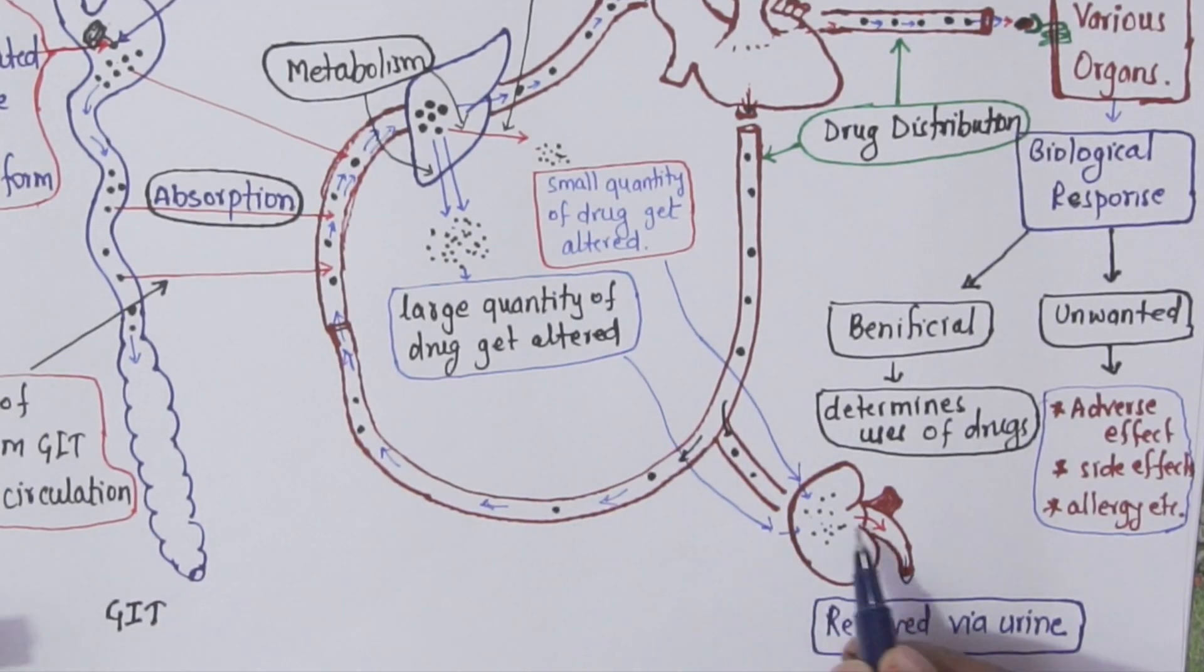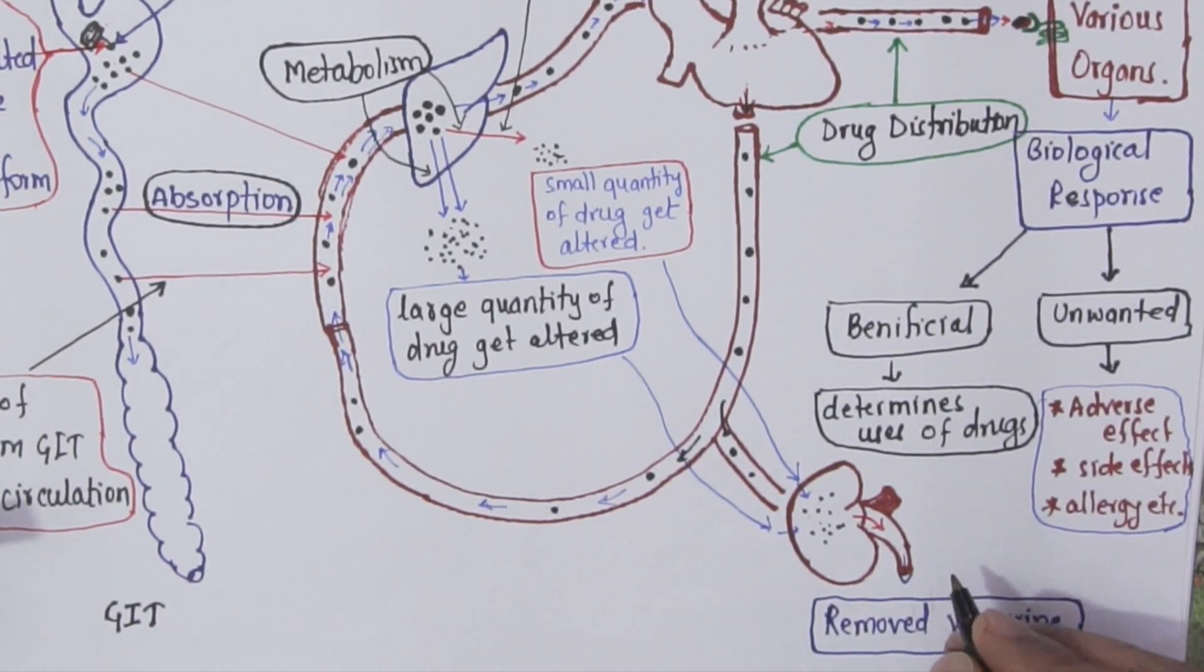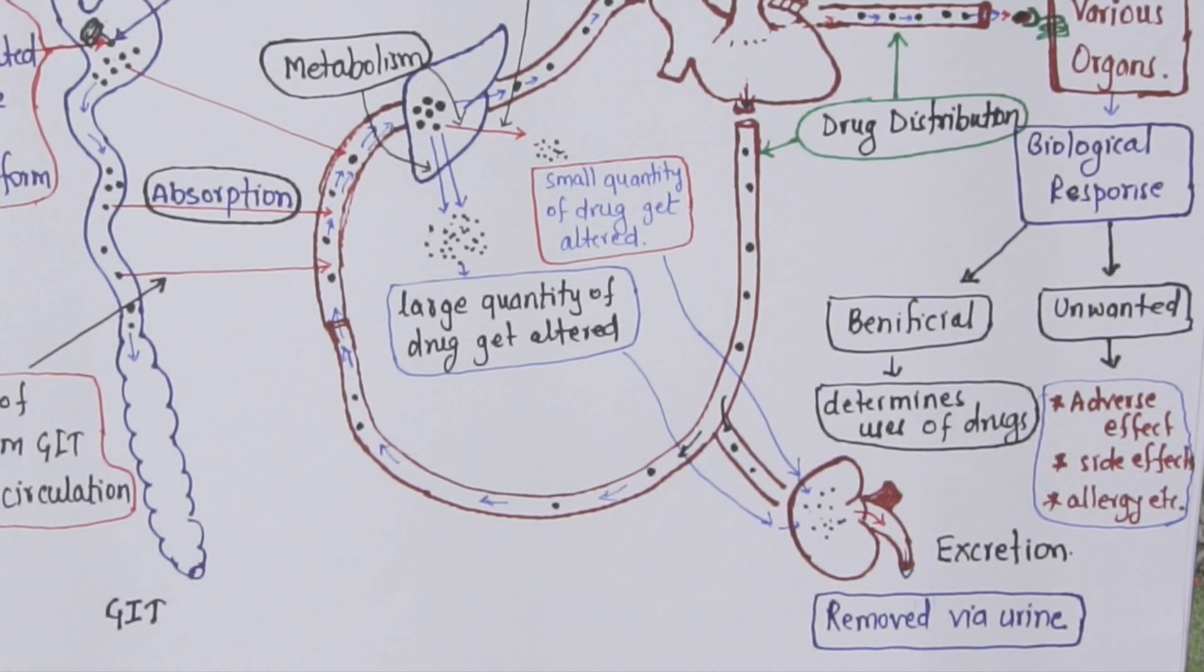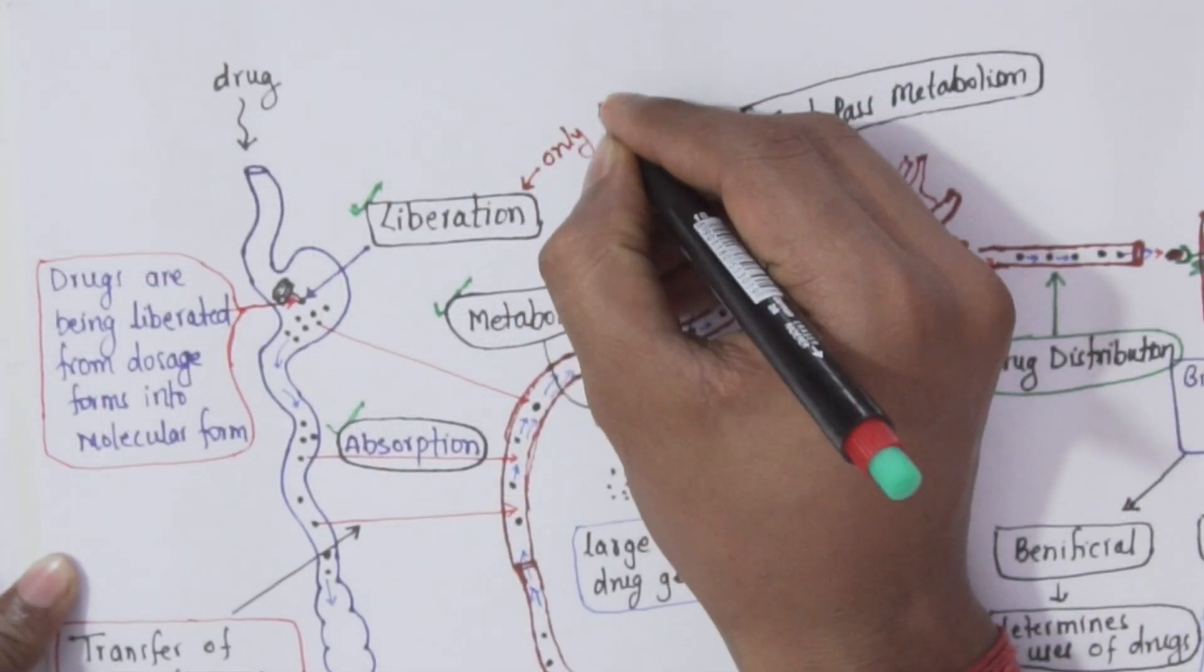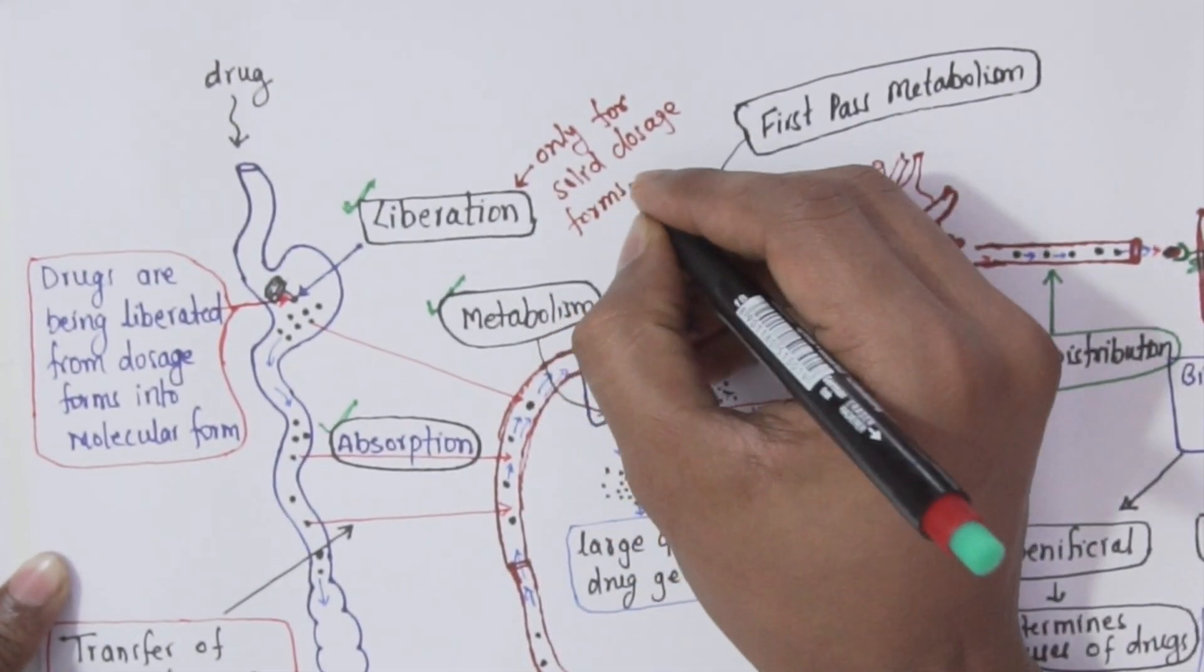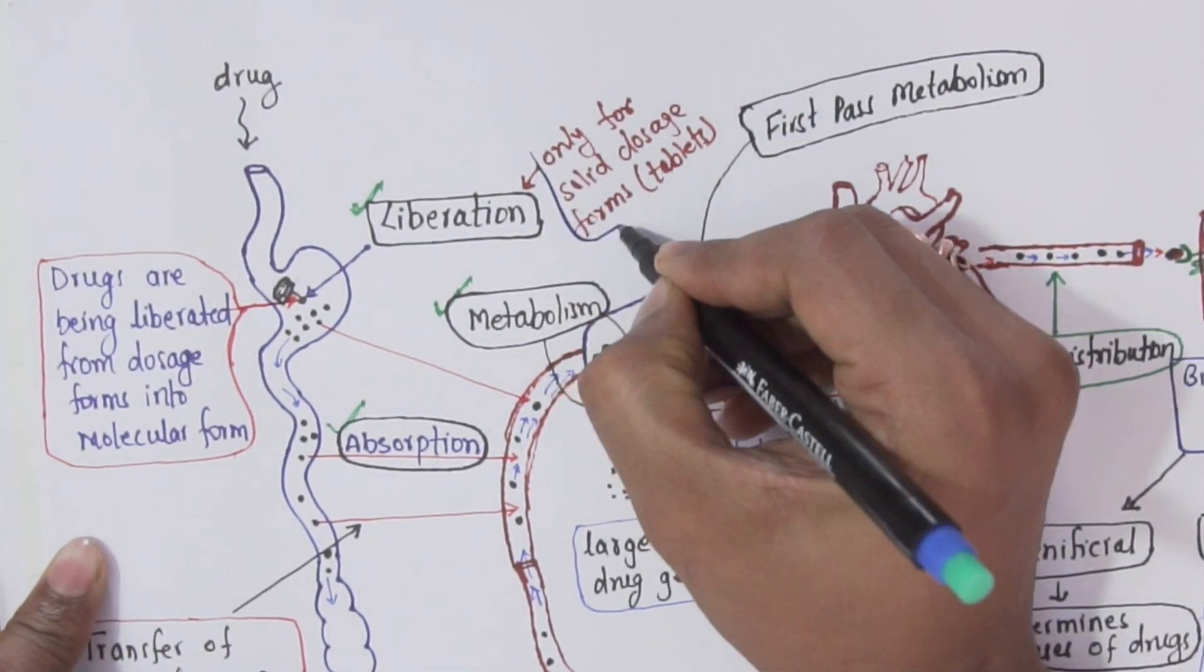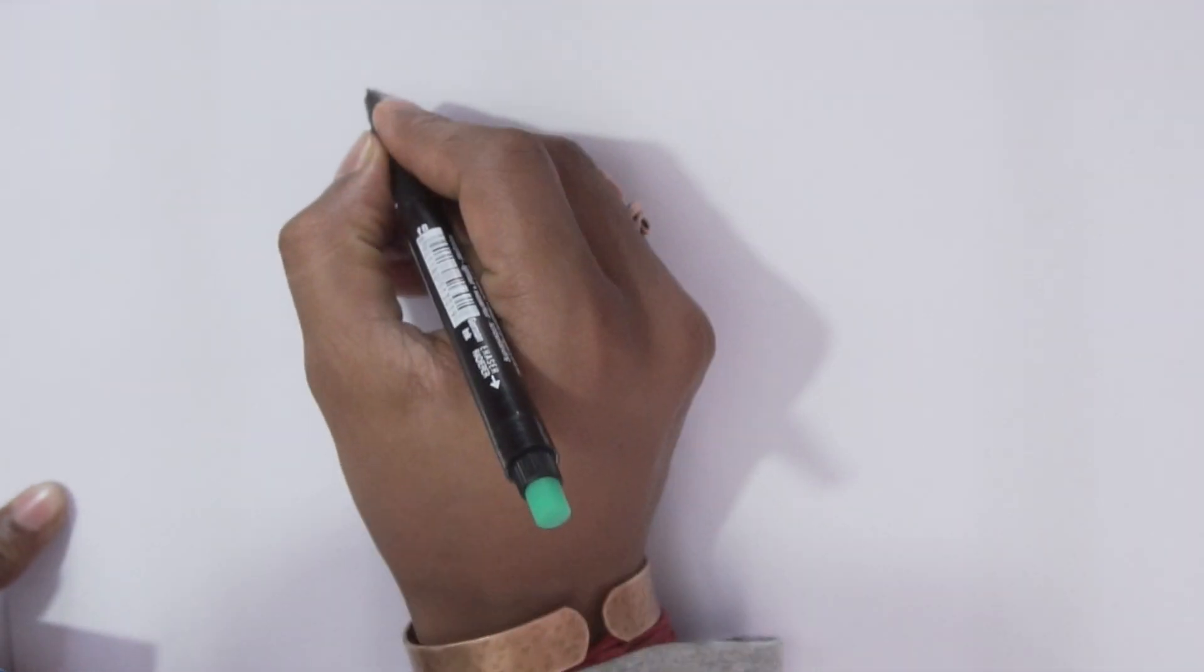In this step, metabolized drugs or altered drugs will be removed from our body. This is called excretion. You should always remember that liberation is only for solid dosage forms like tablets and capsules, but not for liquids as they are already in molecular form.